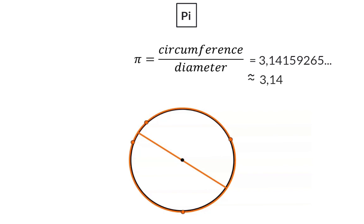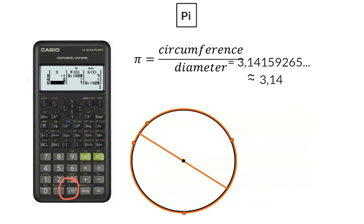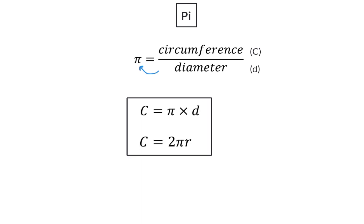When doing calculations without a calculator you can use the rounded value of 3.14. But where you are allowed to use your calculator, you can make use of the pi button and ensure that you use the 100% correct value. Now that we know this ratio, we can with a bit of algebra manipulate it by multiplying the diameter to get the formula for the circumference of a circle. We also know that the diameter consists of two radii, so substituting diameter with two radii gives another formula: the circumference equals 2 times pi times the radius.